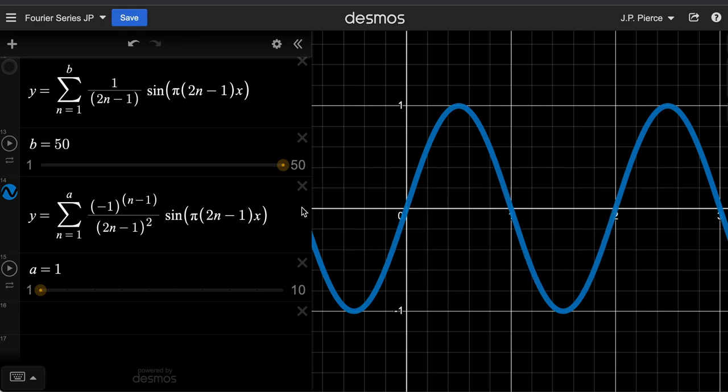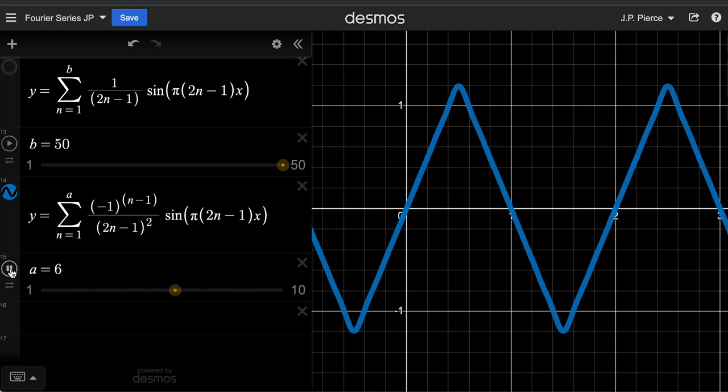The next term that we would add on would be negative 1 over 9 sine 3 pi x. And so we're going to just see what happens if you add terms like that. And so I'll just let this play out. And you see it approaches this sharp, pure sawtooth, zigzag type function.